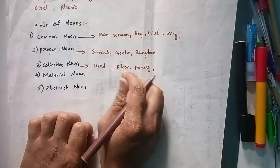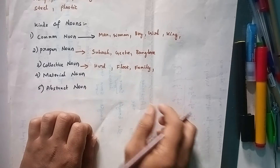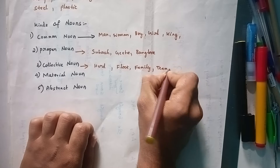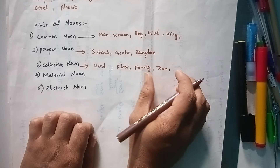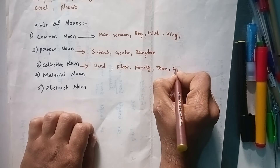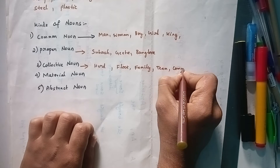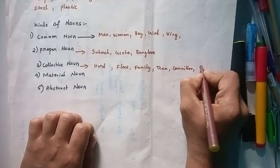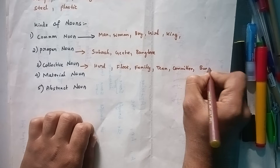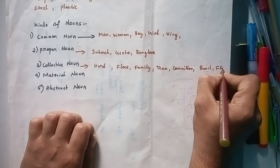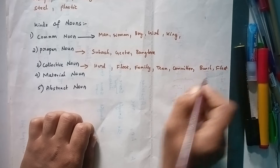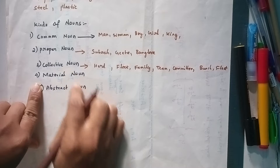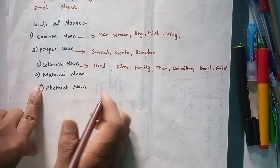Herd means a group of animals is called a herd. Next: team — Indian cricket team, hockey team. Committee — committee of officers, committee of generals. Fleet — these are all examples of collective nouns.